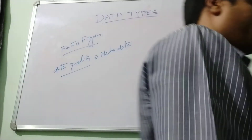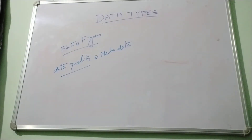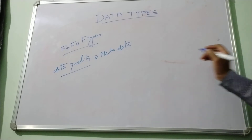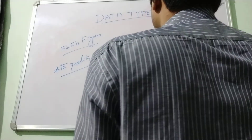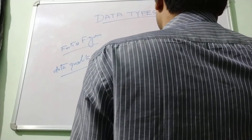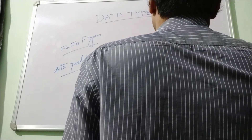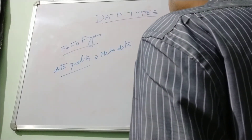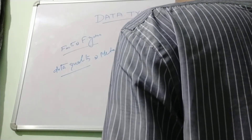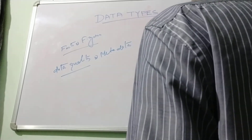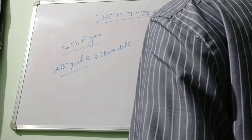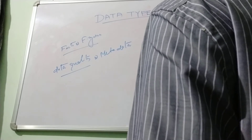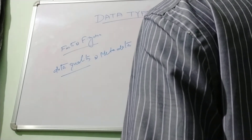So based on the data sources, we have classified the data in GIS. In GIS, one is primary data and the second one is secondary data.